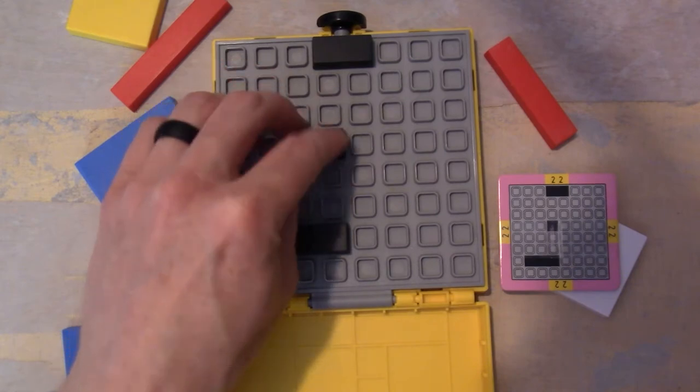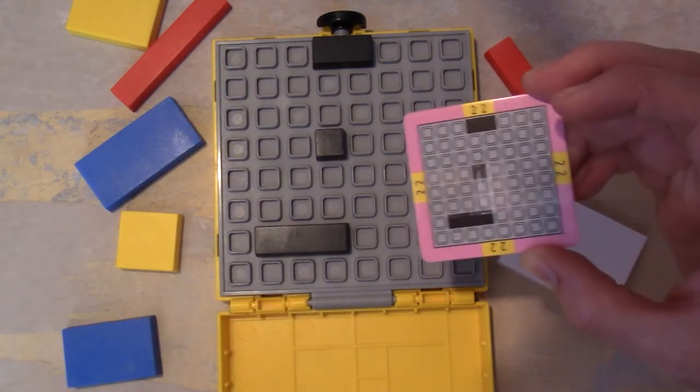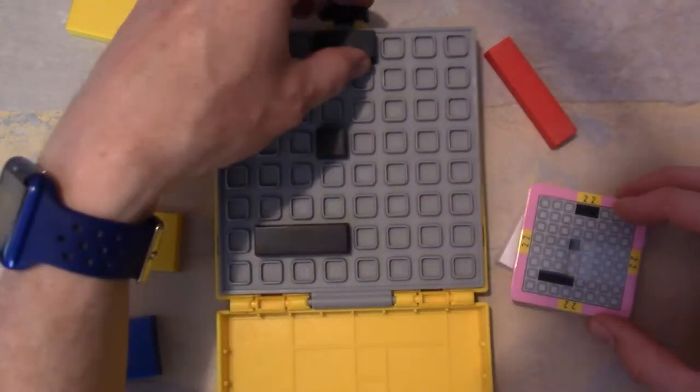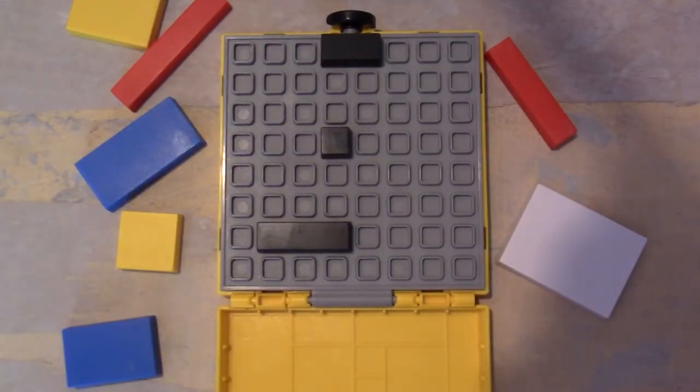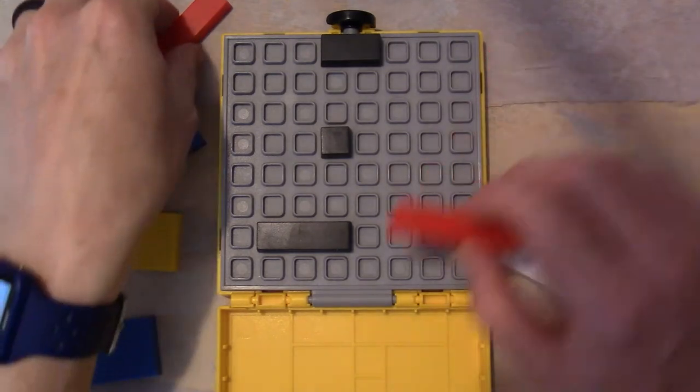You set up the black tiles, and those are the ones that do not move. Then you fit everything else around those tiles. That's it. Easy setup, easy explanation, great for all ages.